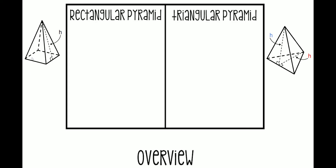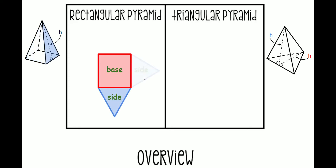We start off by drawing our net, which is basically the shape unfolded. We start by drawing our base. In this case, our base is a rectangle, so we're going to draw a rectangular base. Because our base has four sides, that means we should have four triangular sides as well. So we're going to draw the front side, the right side, the back side, and our left side. This is going to help us find the surface area for a rectangular pyramid.